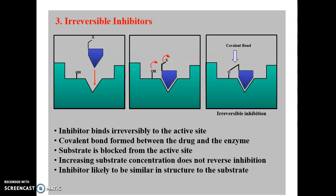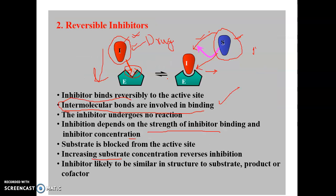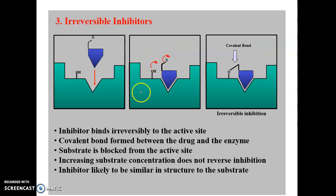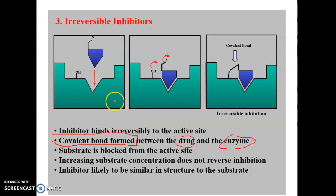Now moving to irreversible inhibitors. The key difference between reversible and irreversible inhibition is the binding nature. In reversible inhibition, only intermolecular bonds are involved. In irreversible inhibition, a covalent bond forms between the amino acid residues of the enzyme and the drug molecule. The inhibitor binds irreversibly to the active site.